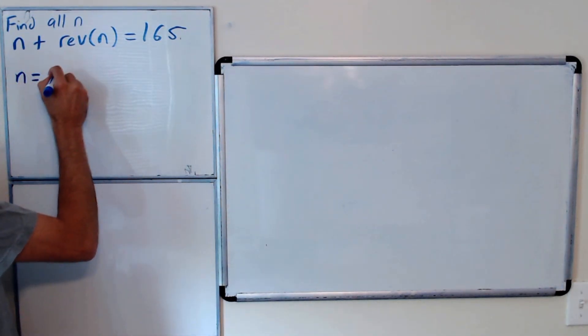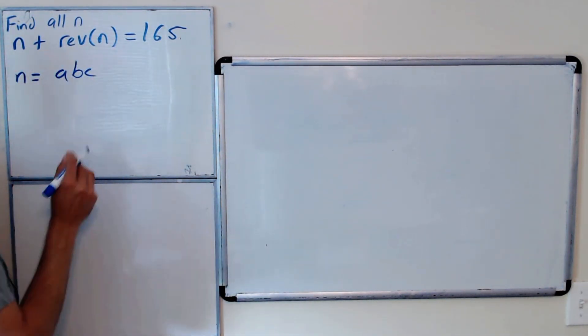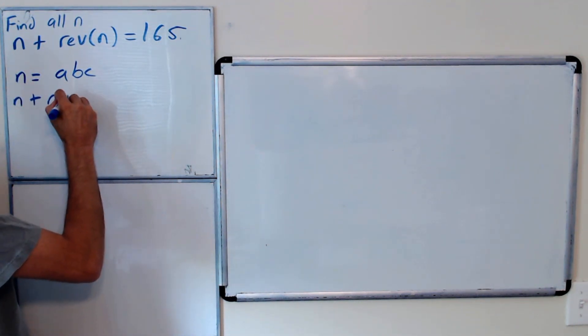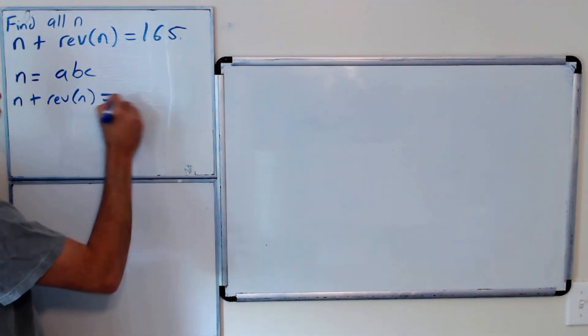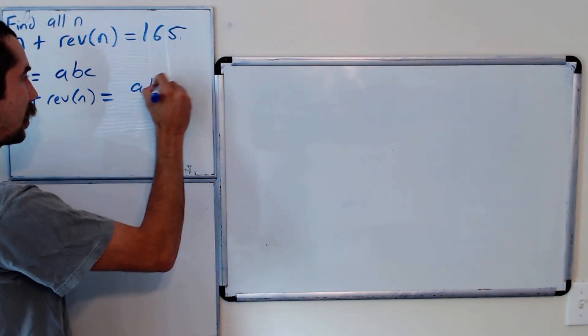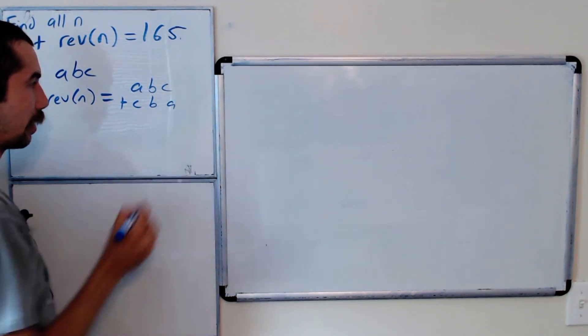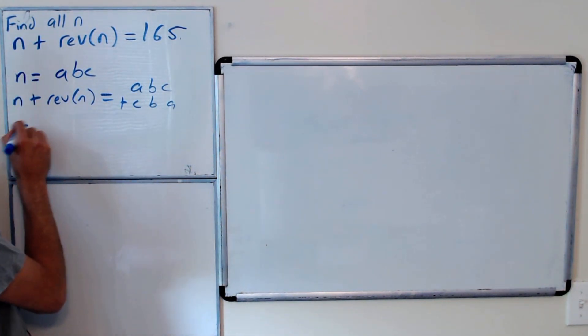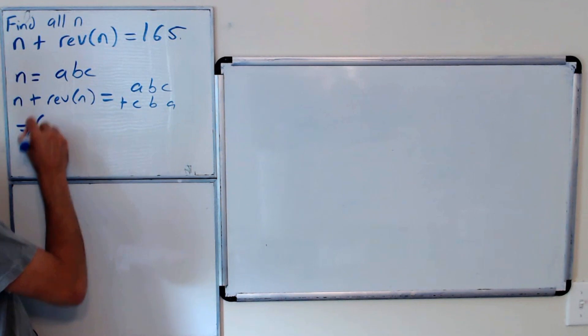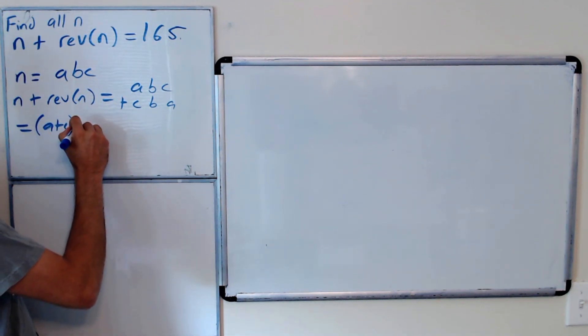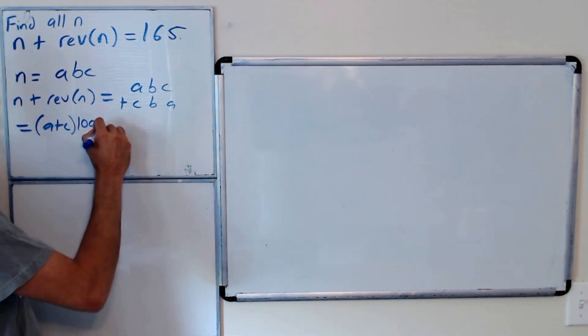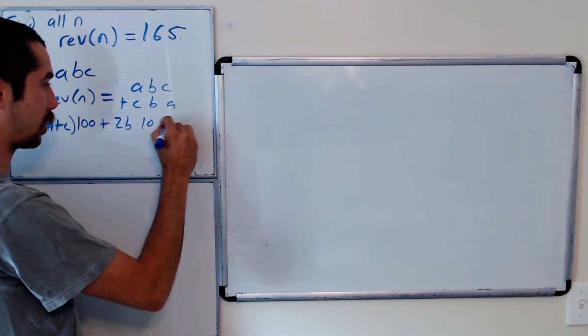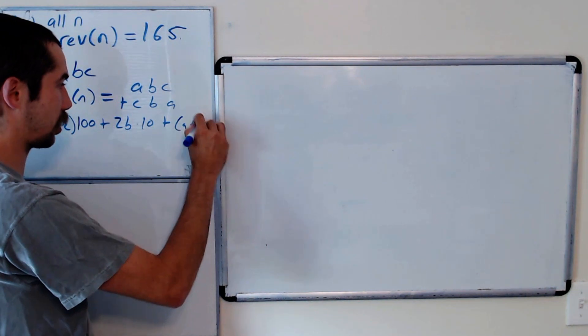If n is a three-digit number, I'll write it as ABC. Then n plus reverse n equals ABC plus CBA. If we do out this sum, that's a plus c times 100 plus 2b times 10 plus a plus c.